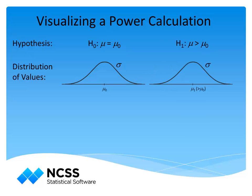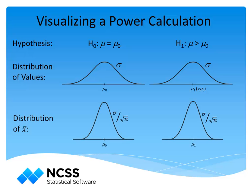If a sample of size n is taken, the distribution of possible means from the sample can be constructed assuming either the null hypothesis is true or assuming the mean is the non-null value.